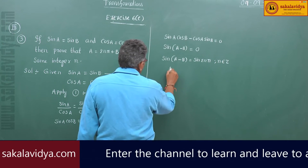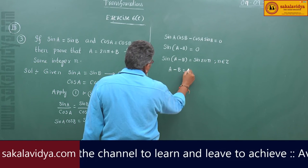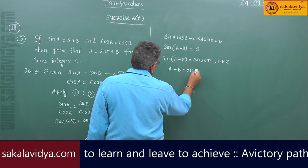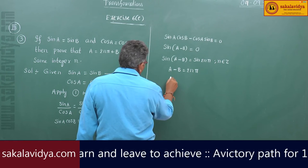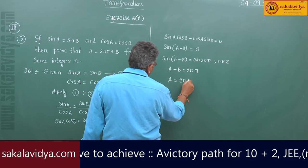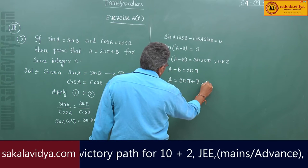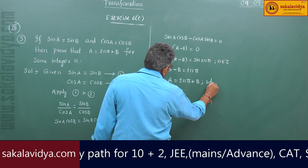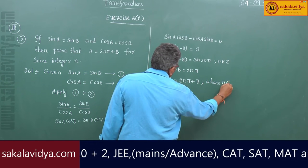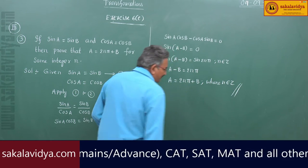Therefore, a minus b equals 2nπ, which gives a equals 2nπ plus b, where n belongs to integers.